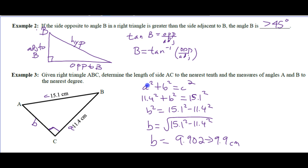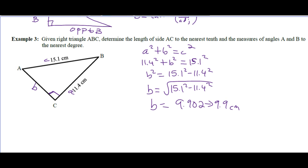We're using Pythagorean theorem — if you have two sides of a right triangle, you use Pythagorean theorem. If we want to get the measures of angle A and angle B, what we should do is use sides that are already given, not use calculated numbers. If you ever do use any calculated numbers, you only round at the end. Do not round in between.